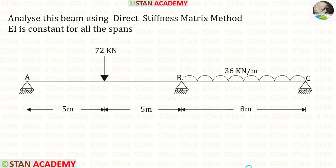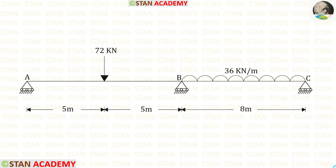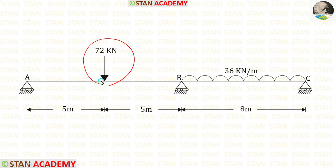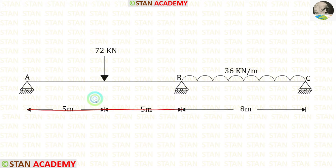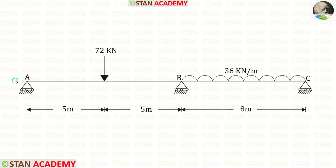Hello everyone. Today we are going to analyze this beam using the direct stiffness matrix method. Before analyzing, let us see the beam. In this beam there are two spans: span AB and span BC. In span AB we have a point load of 72 kilo Newton acting at the center. In span BC we have a uniformly distributed load of 36 kilo Newton per meter acting for the full span. The length of span AB is 10 meters and the length of span BC is 8 meters. At points A, B, and C we have roller supports.